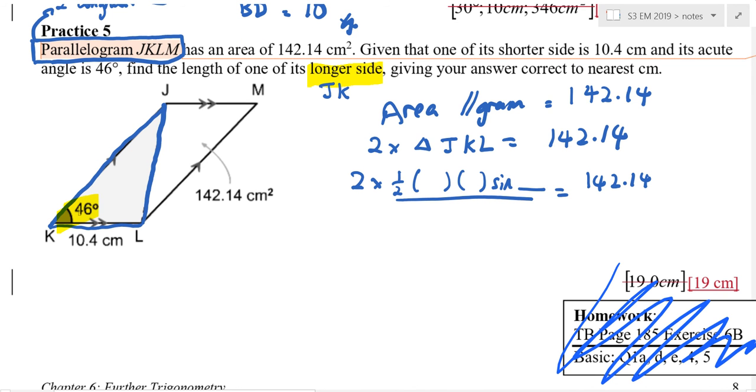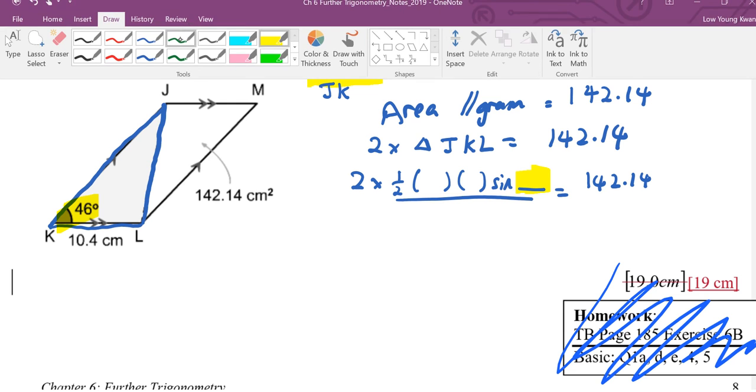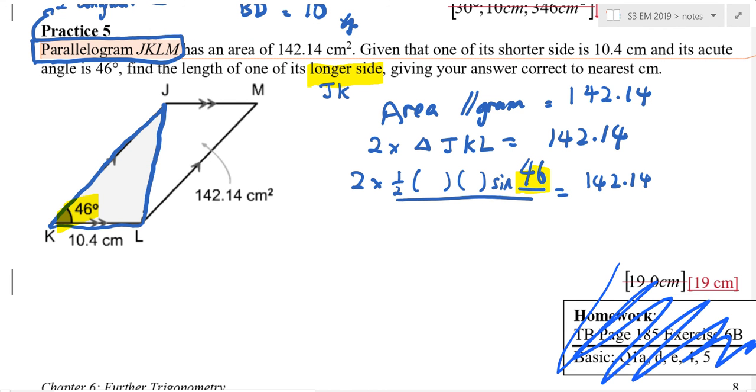I need to use this angle, right? So I will use 46. If I use 46, where are the two lengths I must use? 10.4 and JK. Which means once I solve this, I am able to find JK.